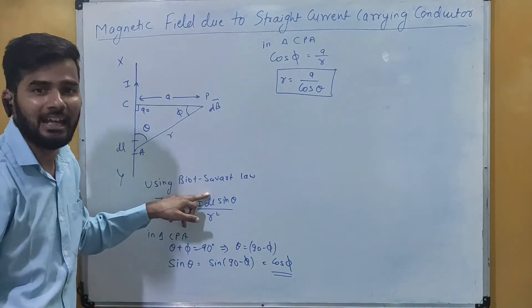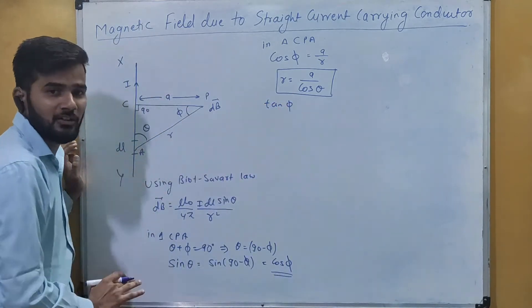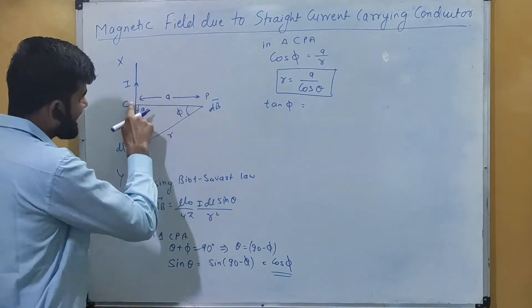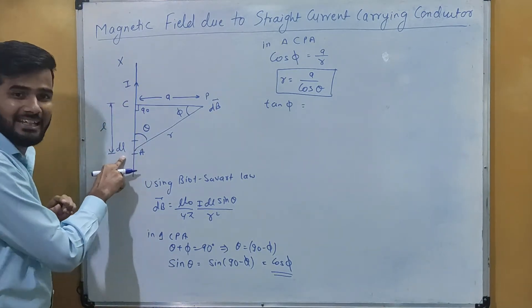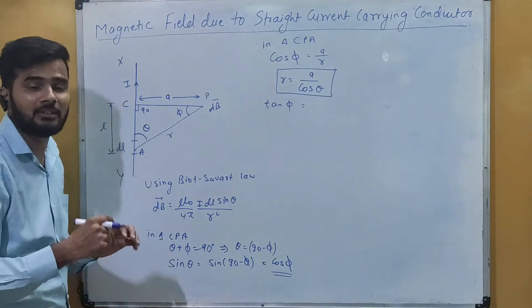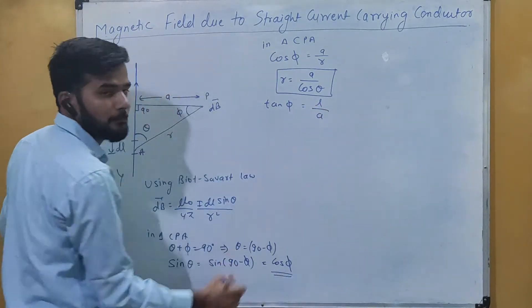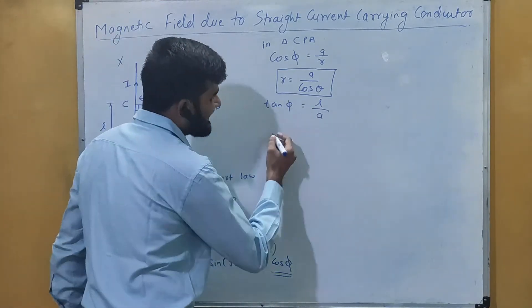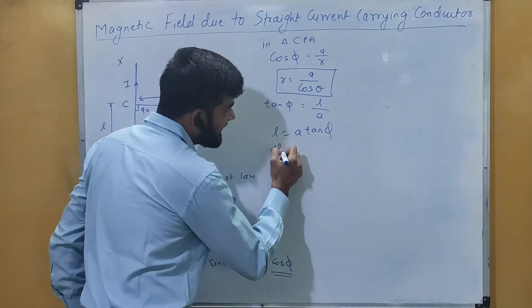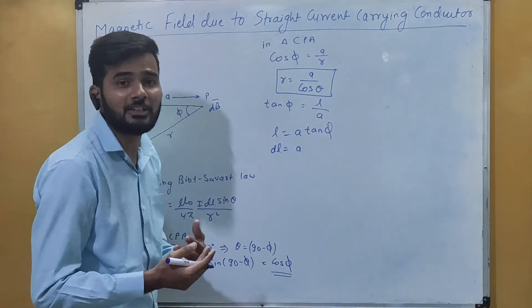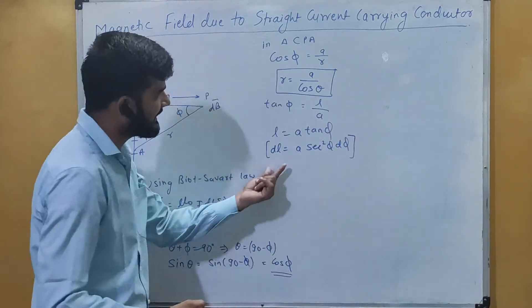Now we will also replace the value of dL. For this we use the identity of tan phi in triangle CPA. tan phi equals perpendicular upon base. We name this distance along the conductor as L, so tan phi equals L/A, which gives L equals A tan phi. Differentiating with respect to phi, dL equals A sec²φ dφ.